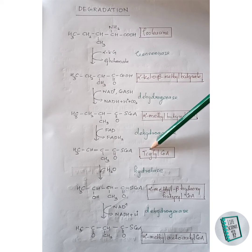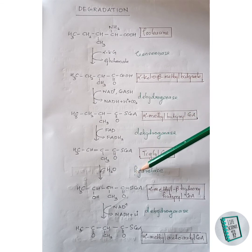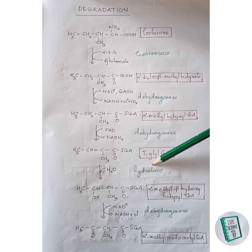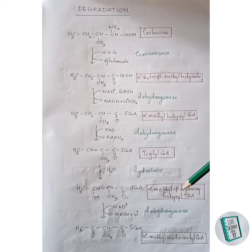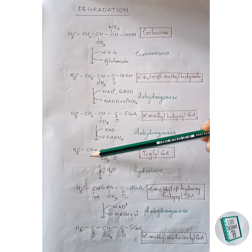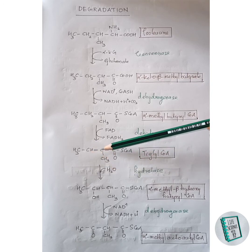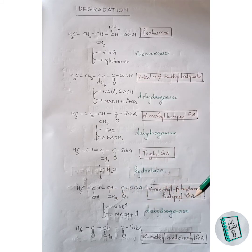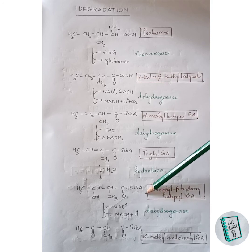Tiglyl CoA then undergoes hydration — addition of a water molecule — in the presence of hydratase enzyme. The OH group of water joins with one carbon and the H group joins with the adjacent carbon, forming alpha-methyl-beta-hydroxy butyryl CoA.